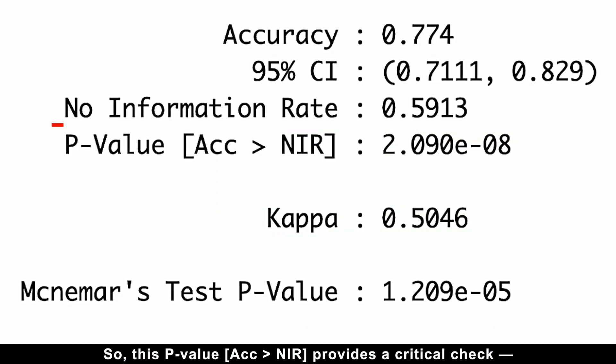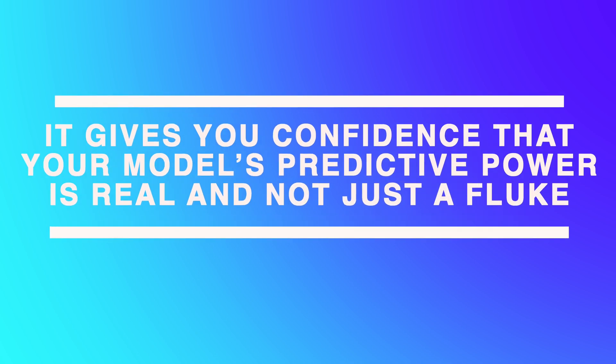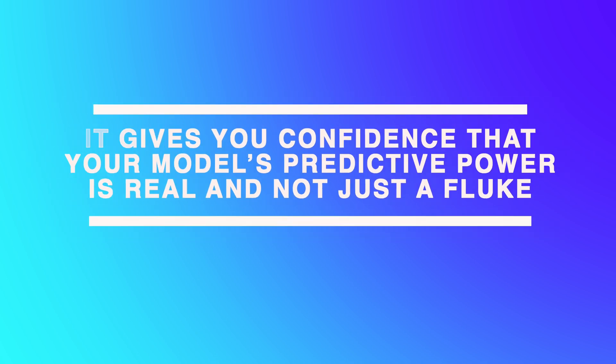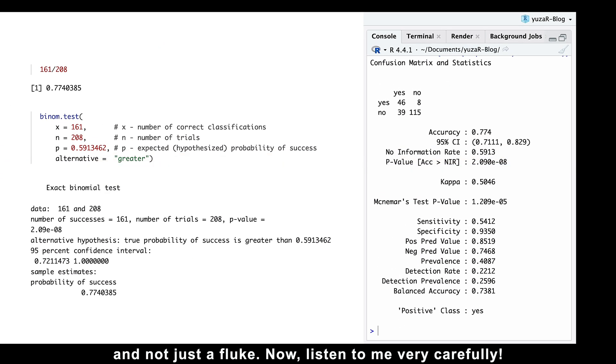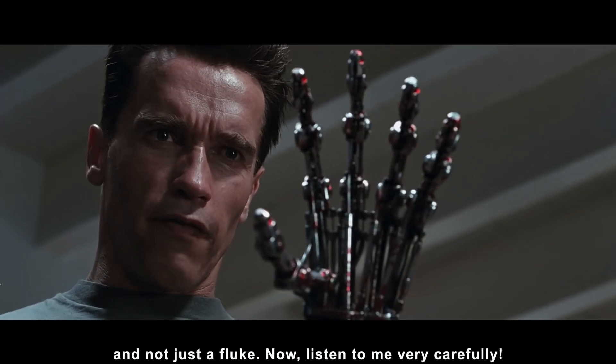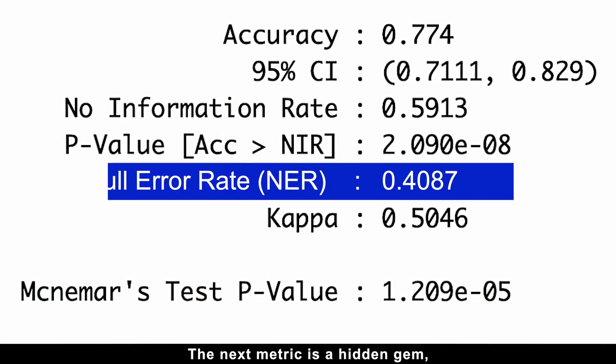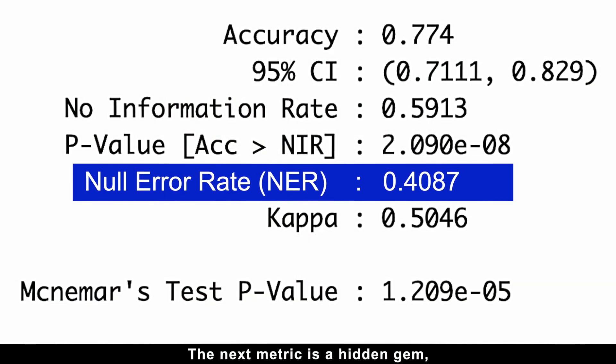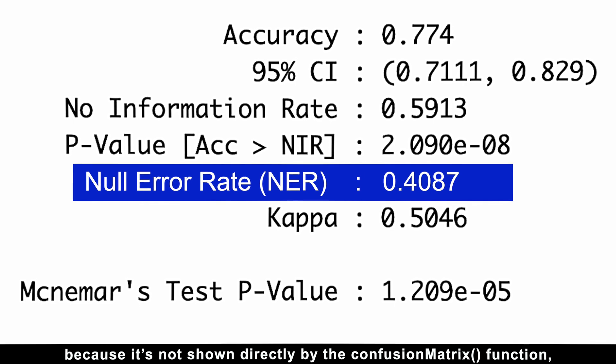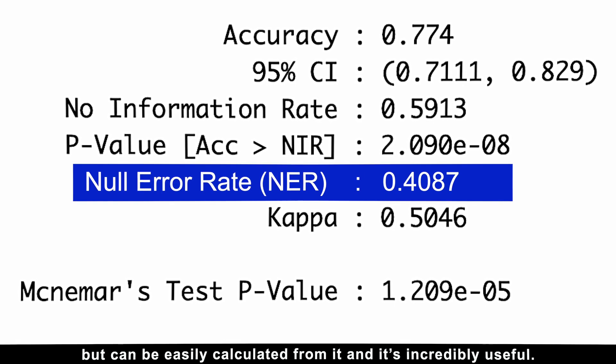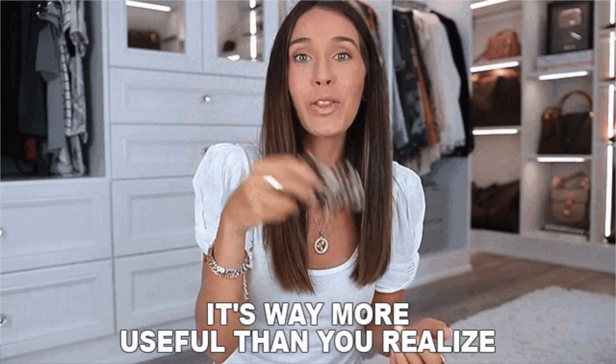So, this p-value provides a critical check. It gives you confidence that your model's predictive power is real and not just a fluke. The next metric is a hidden gem, because it's not shown directly by the confusion matrix function, but can be easily calculated from it, and it's incredibly useful.